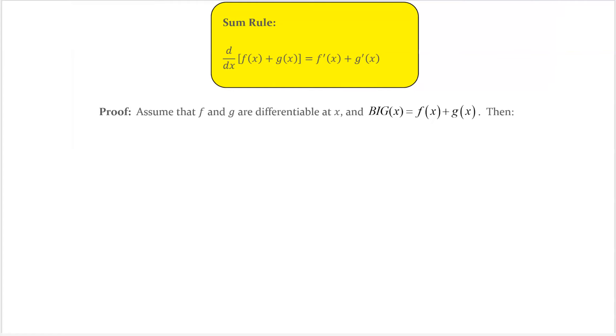So I'm going to go ahead and prove that to you. Here is how the proof goes. We're going to use the definition of derivative. So the definition said, well, let's first call this big function B(x) to be f(x) plus g(x). And we are interested in what is B prime of x.